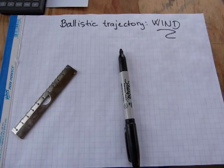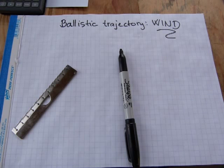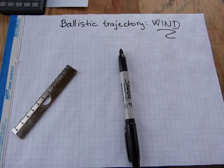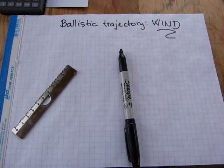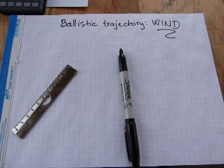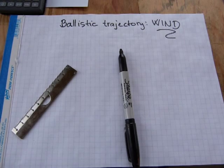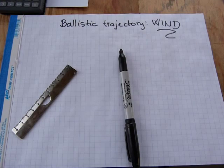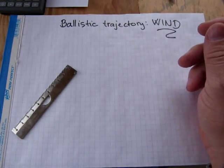Hey everyone! In the previous video we dealt with basic ballistic trajectory calculations and we calculated the vertical drop due to the gravitational acceleration of the earth on the projectile. In this video we will factor in wind. We're gonna progress from simple to more complex to impossible, because wind can be impossible and whirling and unpredictable and incalculable, but we'll leave those for last. So let's get started with the simple stuff.